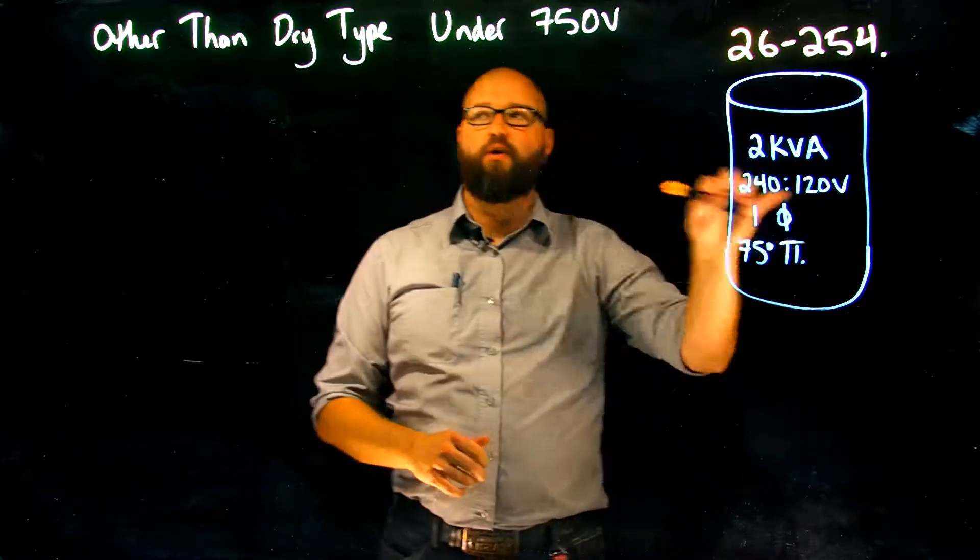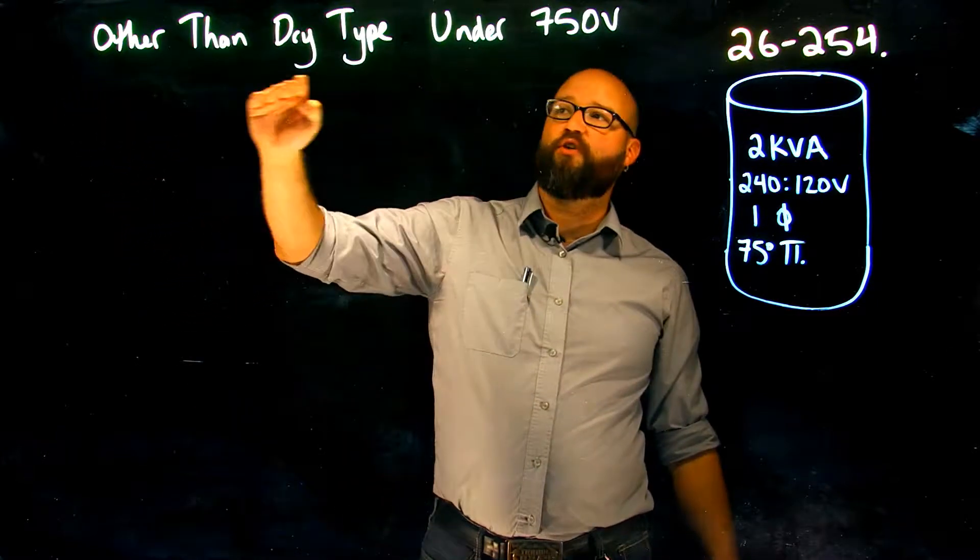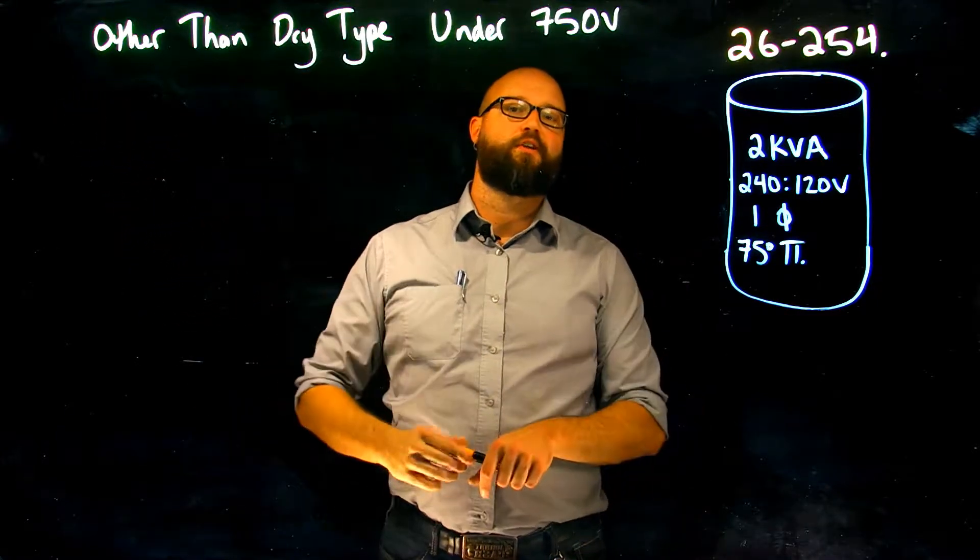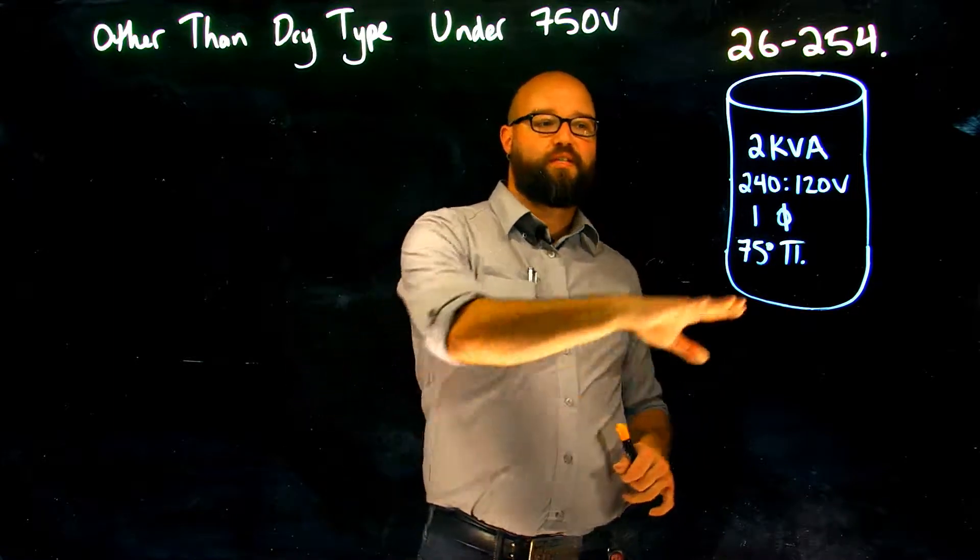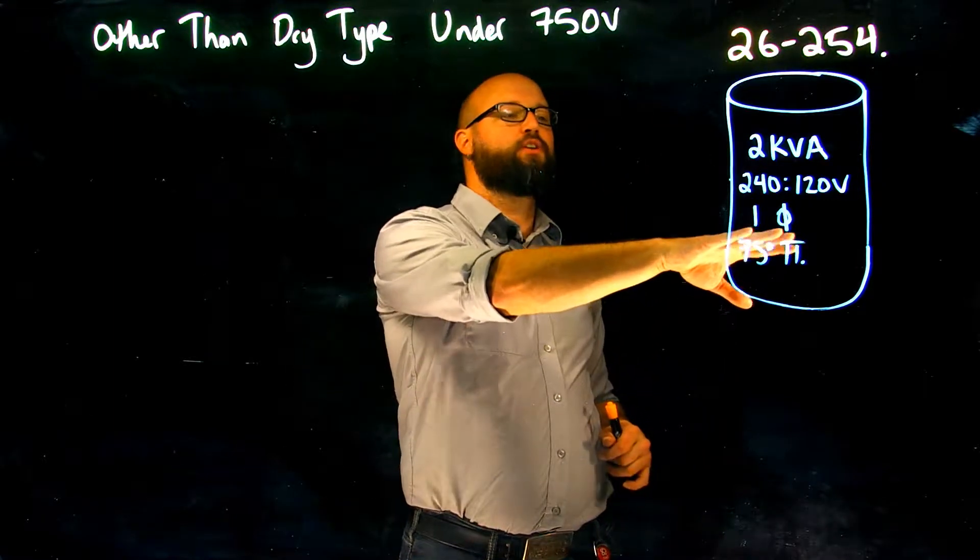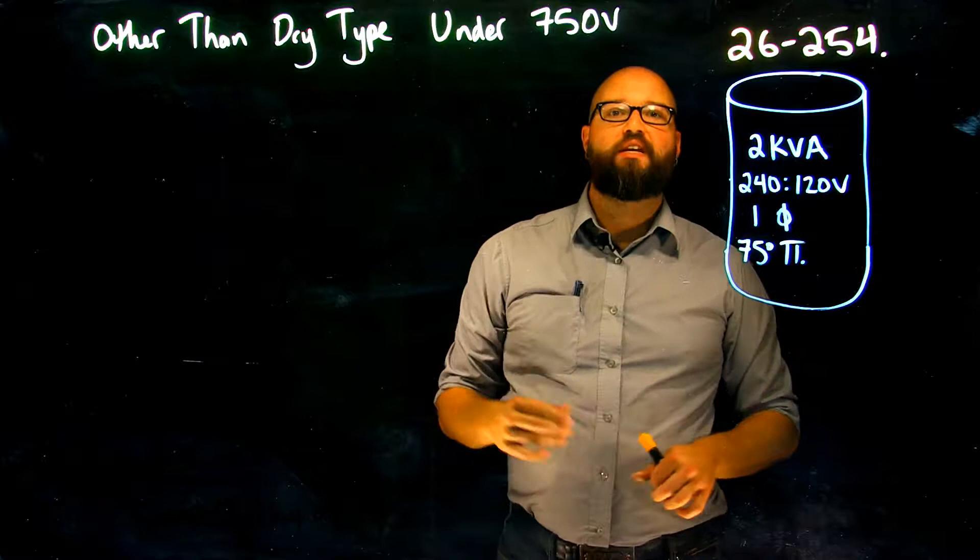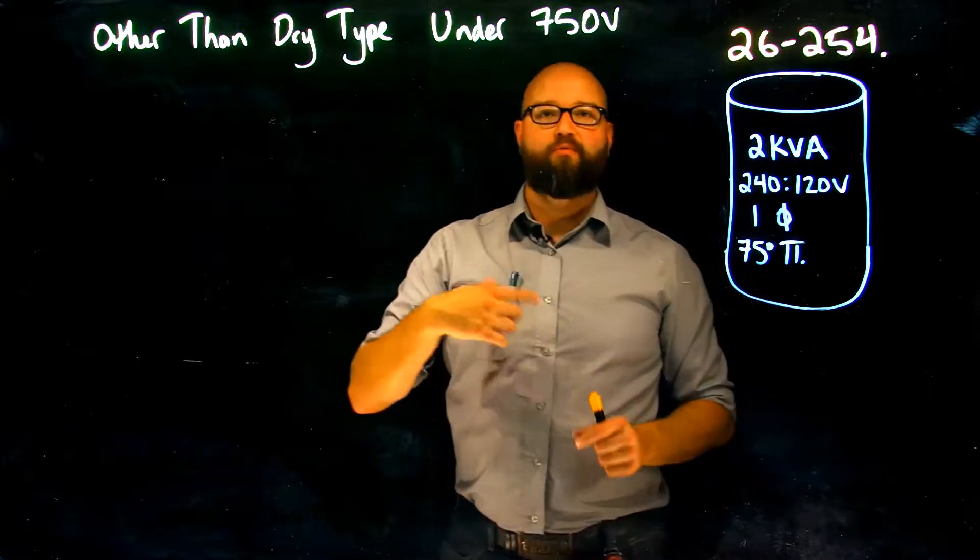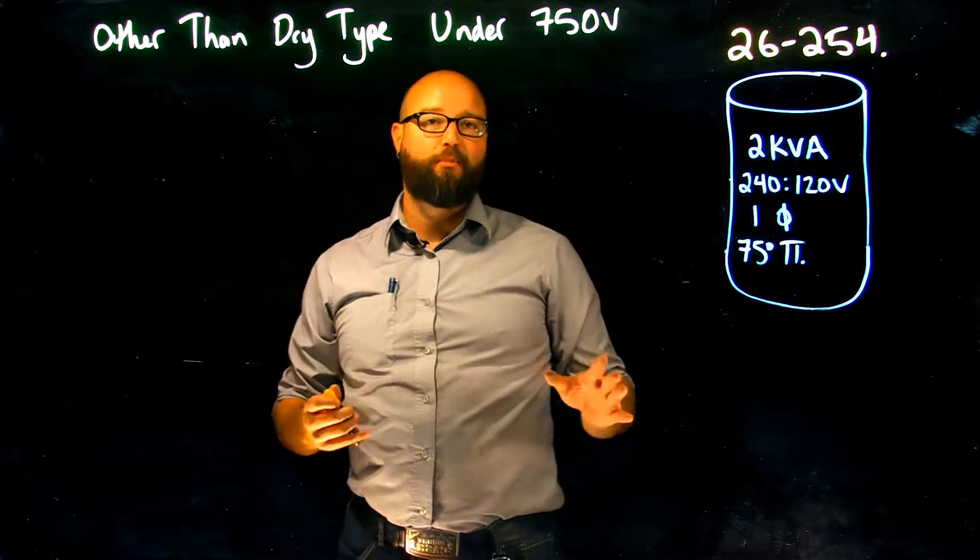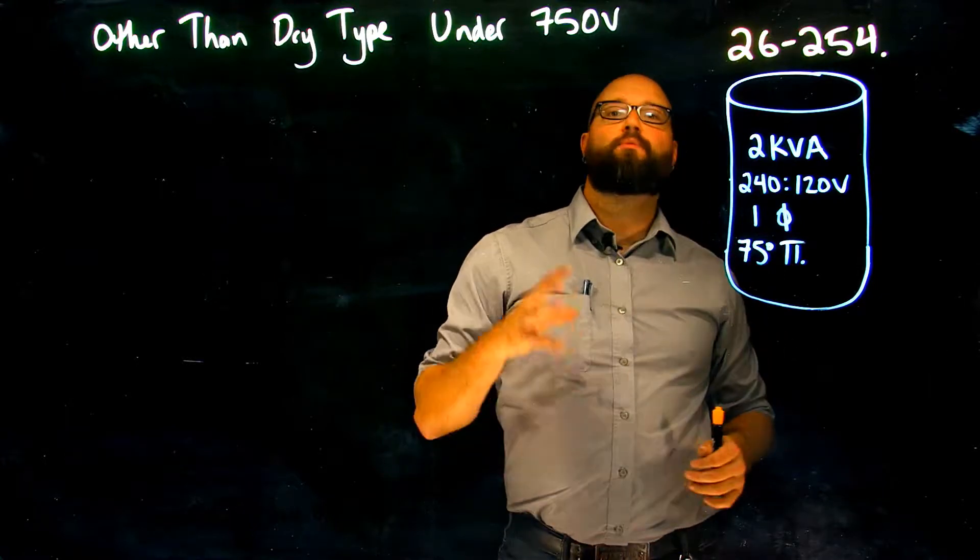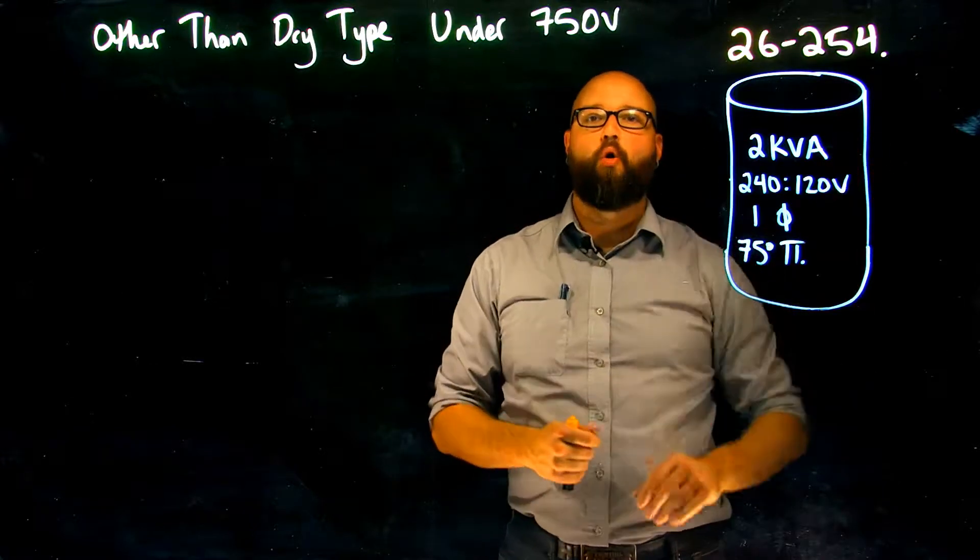In this specific video we are going to be dealing with other than dry type transformers under 750 volts, and we are going to be dealing with only primary protection on this transformer. In the next video we will take a look at what happens when we decide to omit that primary protection. There's rules specific to that, but this one is specific to primary protection only.